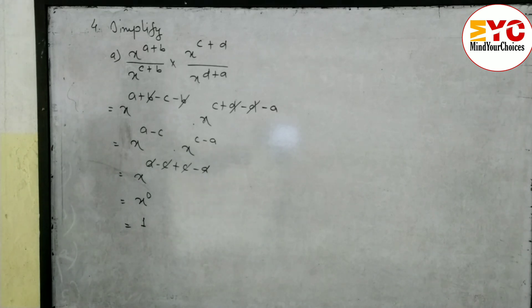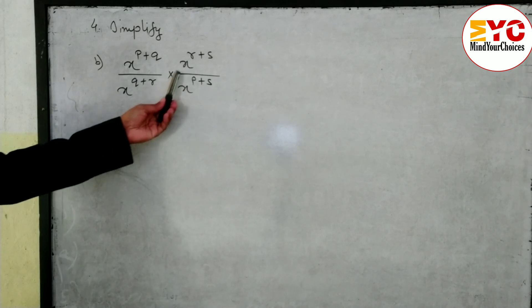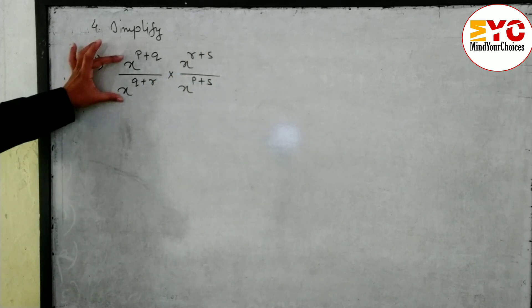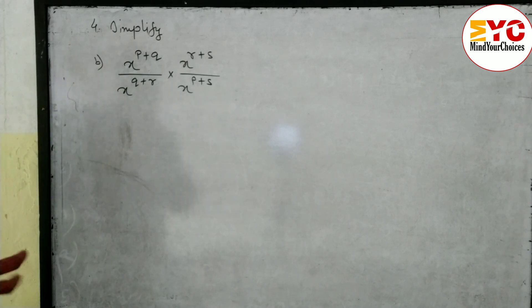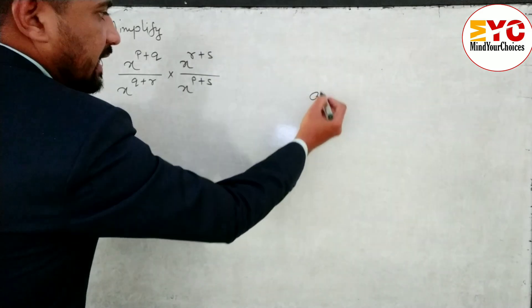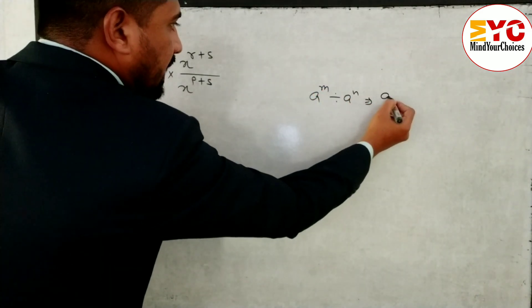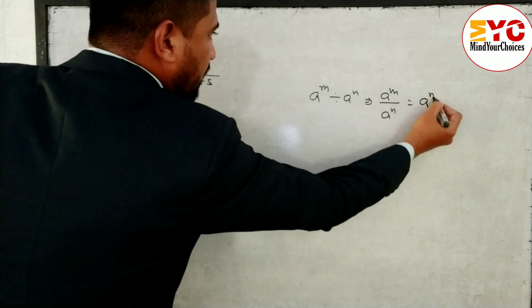Now look at number (b). The question is: x power (p+q) divided by x power (q+r), into x power (r+s) divided by x power (p+s). Base is the same, and in division we subtract the power. The formula is: a^m divided by a^n equals a^(m minus n).